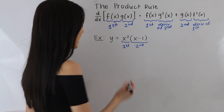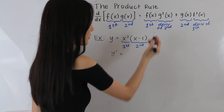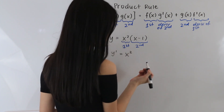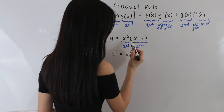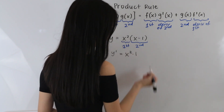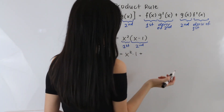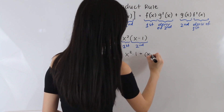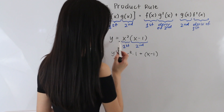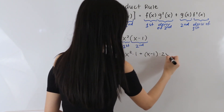Now let's go ahead and take its derivative. We have y prime is equal to the first, so x squared, times the derivative of the second. The derivative of x minus 1 is just equal to 1, and then plus the second, so x minus 1, times the derivative of the first. The derivative of x squared is just equal to 2x.